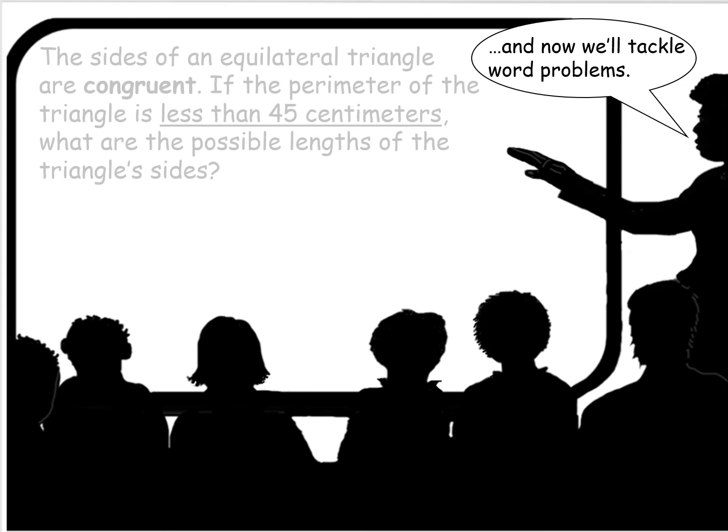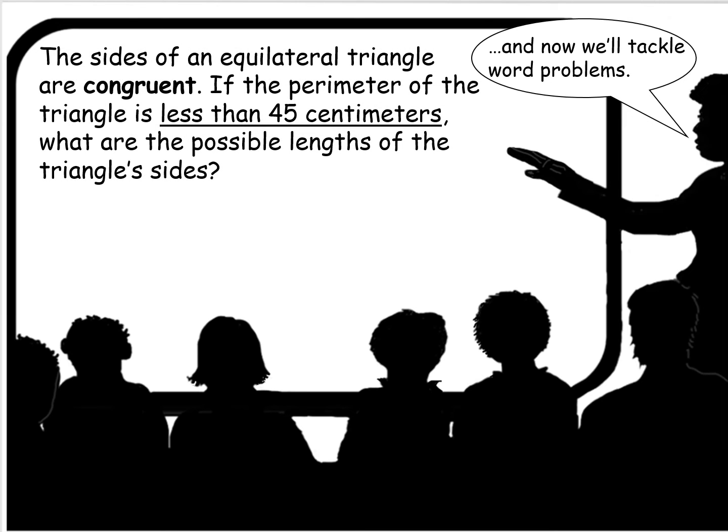Okay, now let's tackle some word problems. If the sides of an equilateral triangle are congruent, congruent meaning equal. Now if the perimeter of the triangle is less than 45 centimeters, what are the possible lengths of the triangle sides?